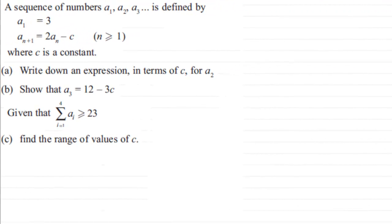We have a good question on sequences and recurrence relationships. We've got a sequence of numbers a1, a2, a3 — first term, second term, third term — defined by the first term a1 equaling 3, and then the (n+1)th term a(n+1) is equal to 2 times the nth term a(n) minus a constant c, where n is greater than or equal to 1 and c is a constant.